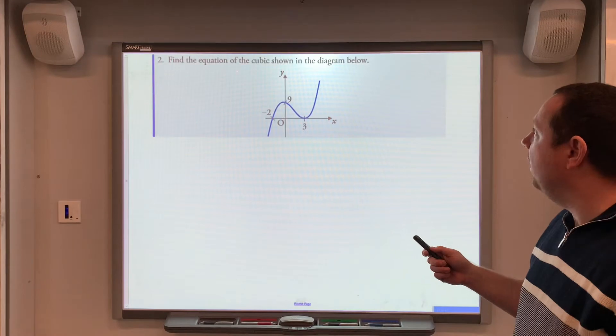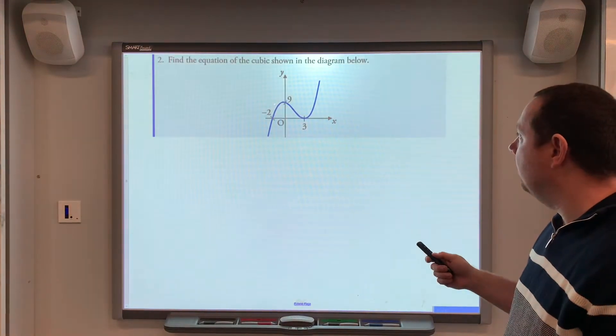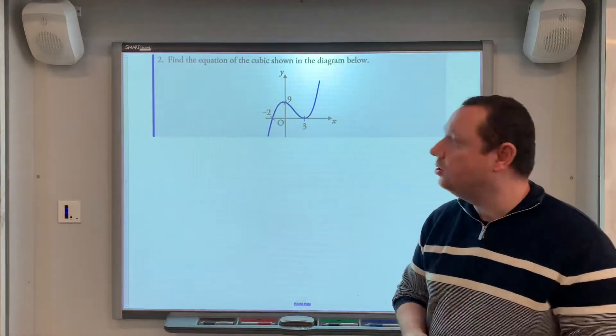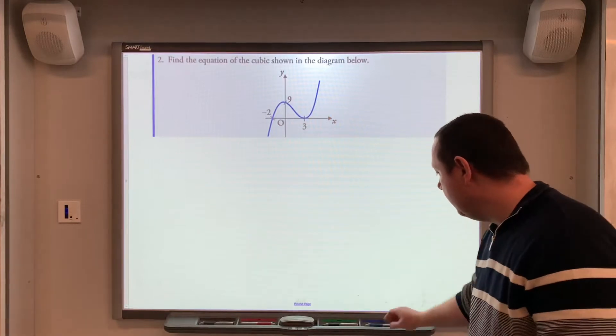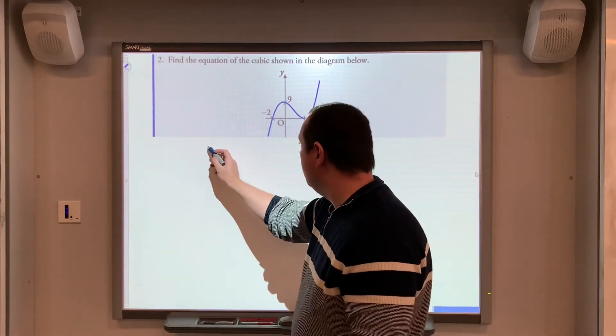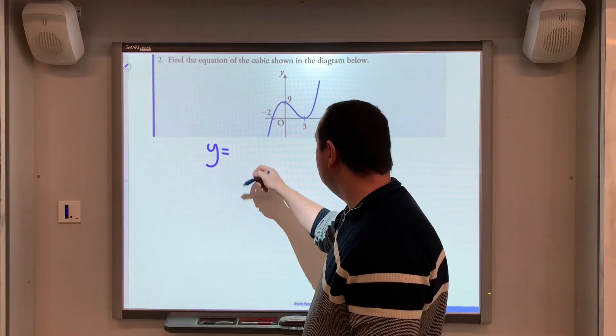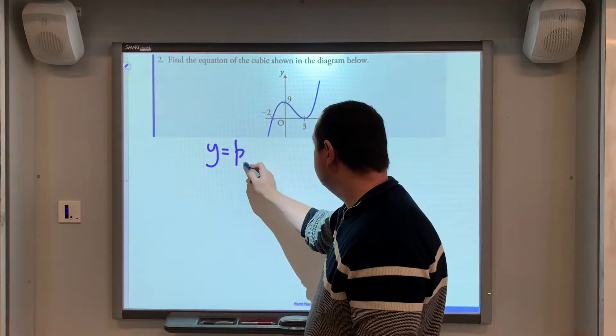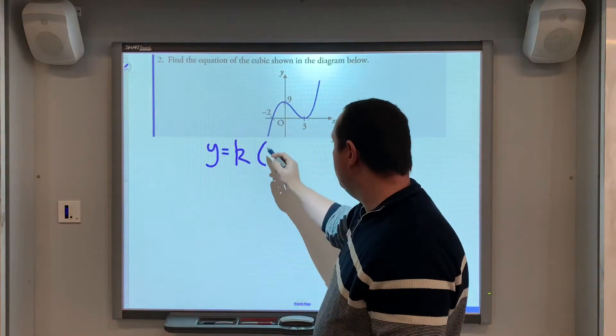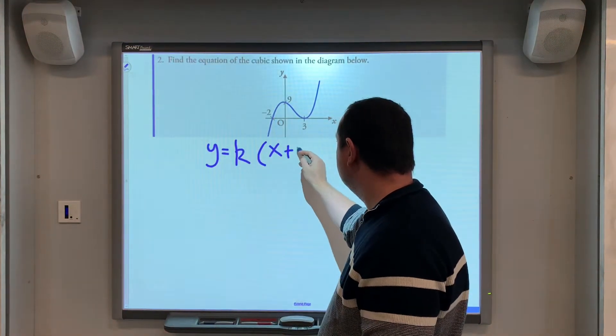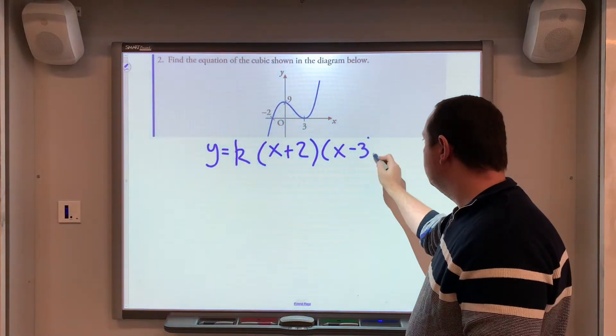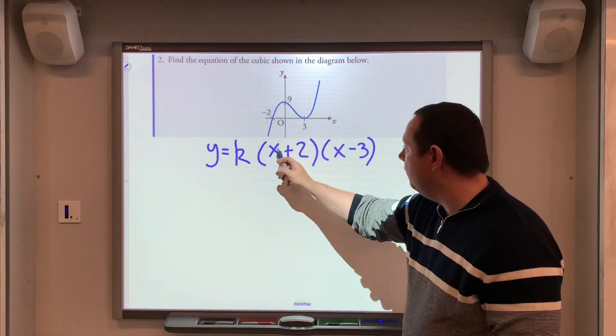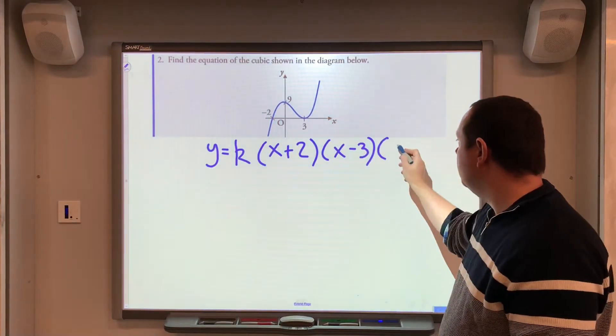Example 2, find the equation of this cubic shown in the diagram. Again, this is taken from my HSN notes. So, it's 2 roots, but notice, it's a cubic, and it's a repeated root. So, the equation must be y equals k, x plus 2, x minus 3, but it must be a repeated root, because I need 3 roots. So, x minus 3 again.